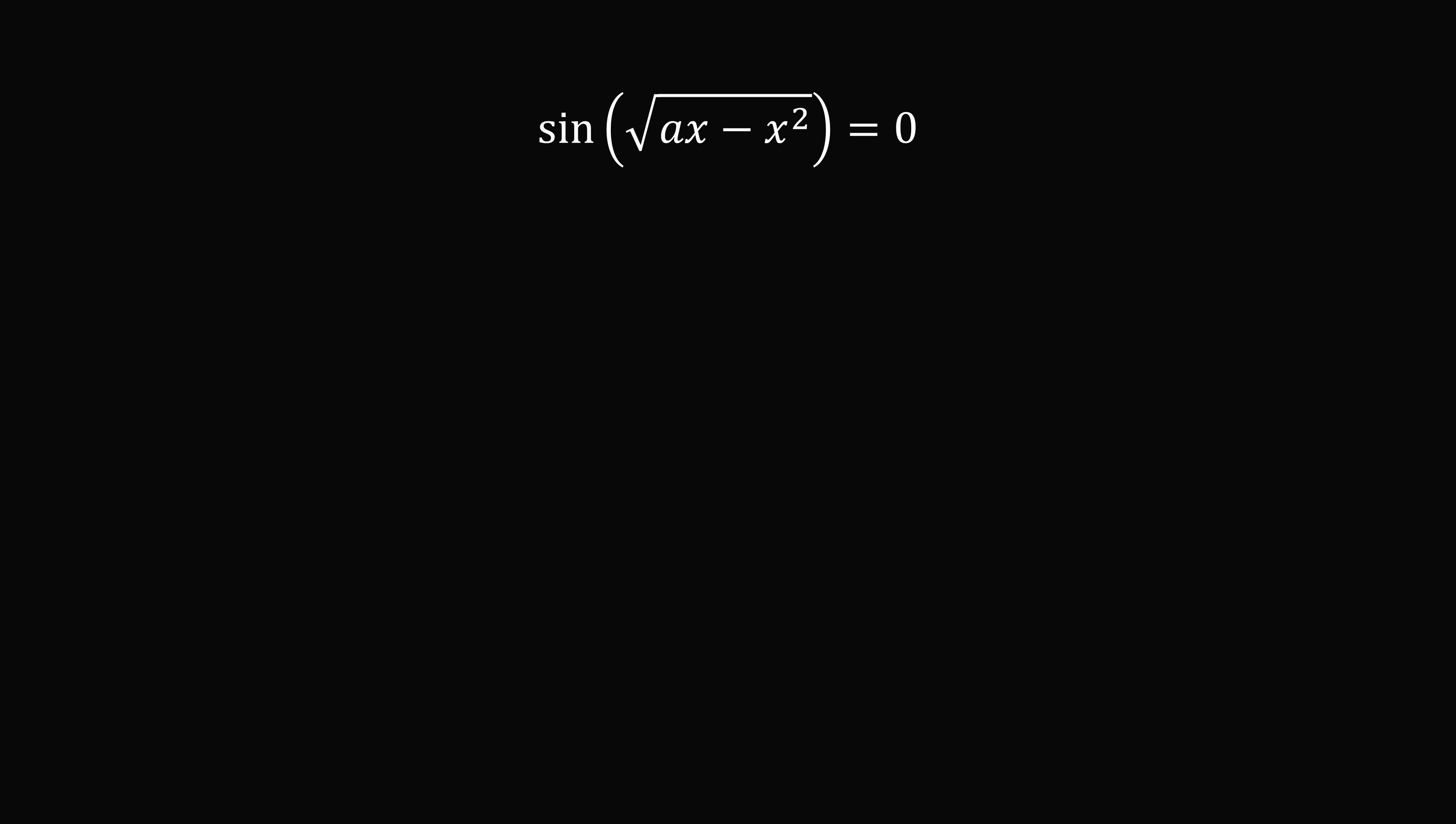So we need the square root of ax minus x squared to be equal to multiples of pi. Now since we have the square root of something, we're going to have the multiple start with 0 because the square root of something will be a non-negative value. So we have 0, pi, 2 pi, 3 pi, all the way up to n times pi.